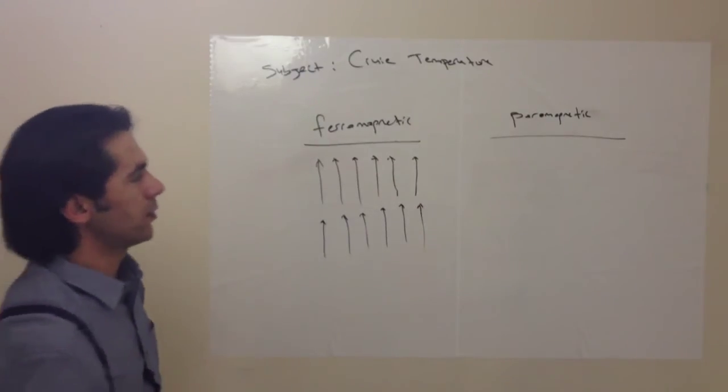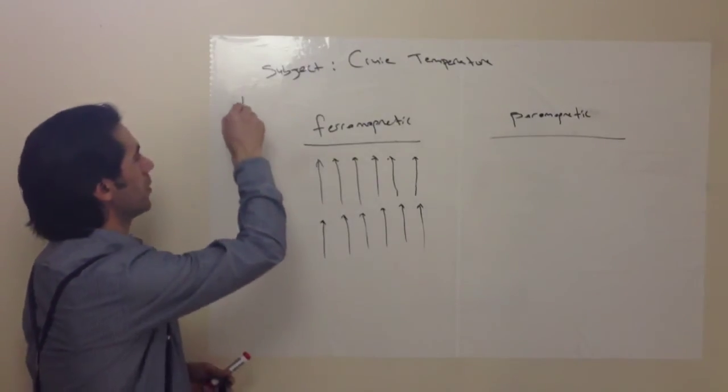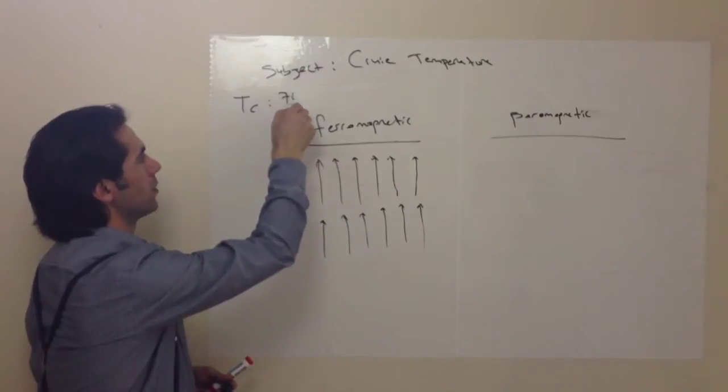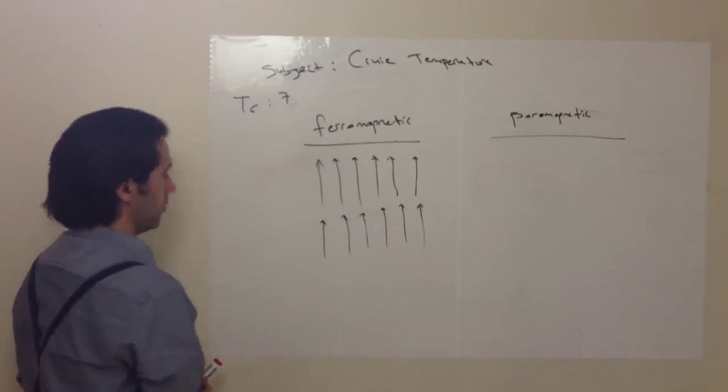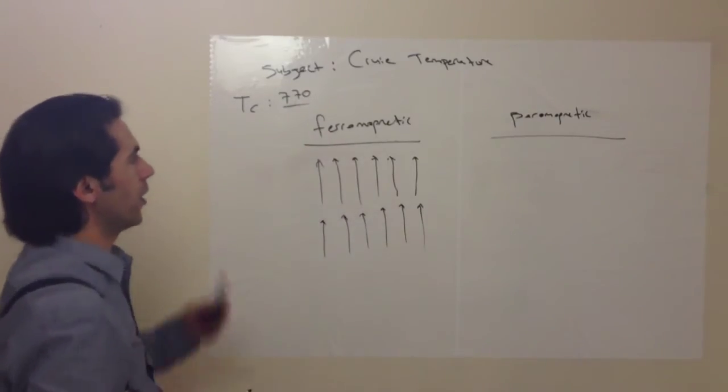When you heat it, when it's above the Curie temperature—for example, this is a symbol—and iron loses its magnetic property at 770 degrees. This is Curie temperature for iron.